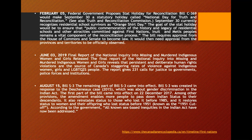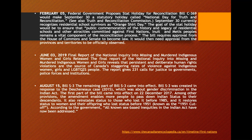On June 3, 2019, the final report of the National Inquiry into Missing and Murdered Indigenous Women and Girls was released. It revealed that persistent and deliberate human rights violations are the source of Canada's staggering rates of violence against Indigenous women, girls, and LGBTQ2S people. The report issued 231 calls for justice to governments, policies, forces, and institutions. This is ongoing and building — there are more people supporting and asking for more help in revealing what is going on and why it is happening to these women.